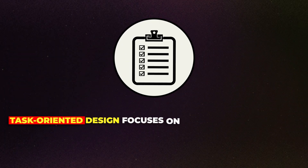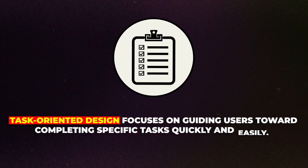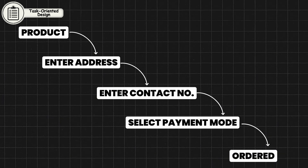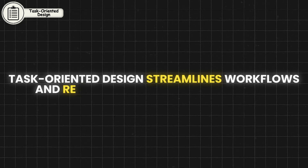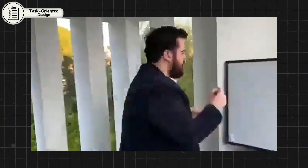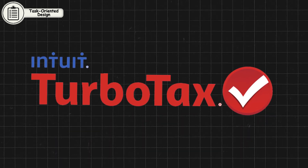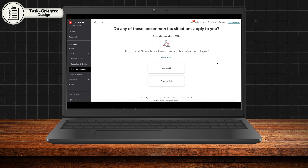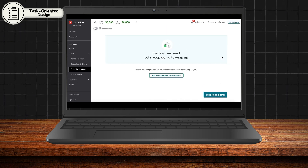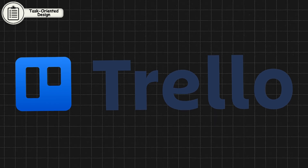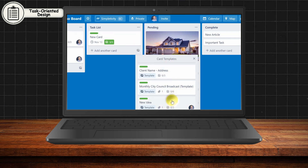Task-oriented design focuses on guiding users toward completing specific tasks quickly and easily. This principle revolves around designing with a clear objective in mind, ensuring that every interaction leads users closer to their goal without unnecessary distractions or complications. Task-oriented design streamlines workflows and reduces unnecessary complexity — it's about making sure that users know what to do next and how to do it, ultimately providing a satisfying sense of progress and accomplishment. TurboTax is a great example, breaking down the complex task of filing taxes into simple, manageable steps. Trello helps users organize and manage projects effectively, offering drag-and-drop cards and checklists to keep users focused on task completion.